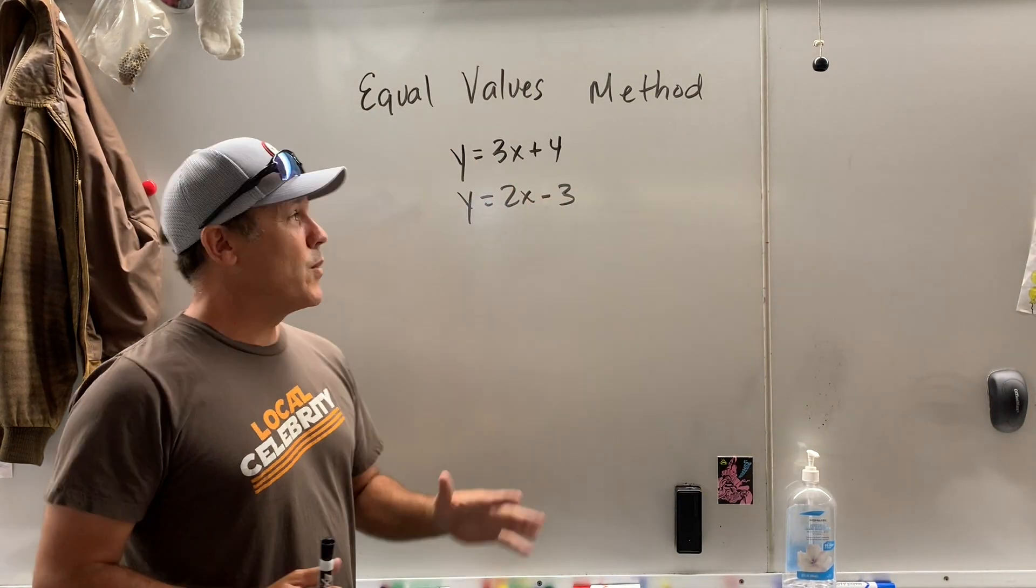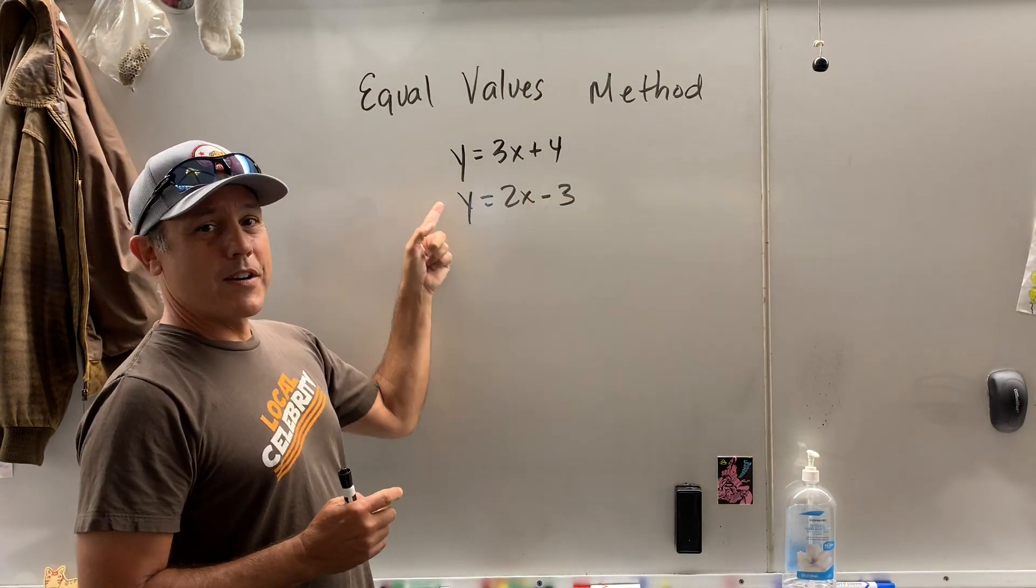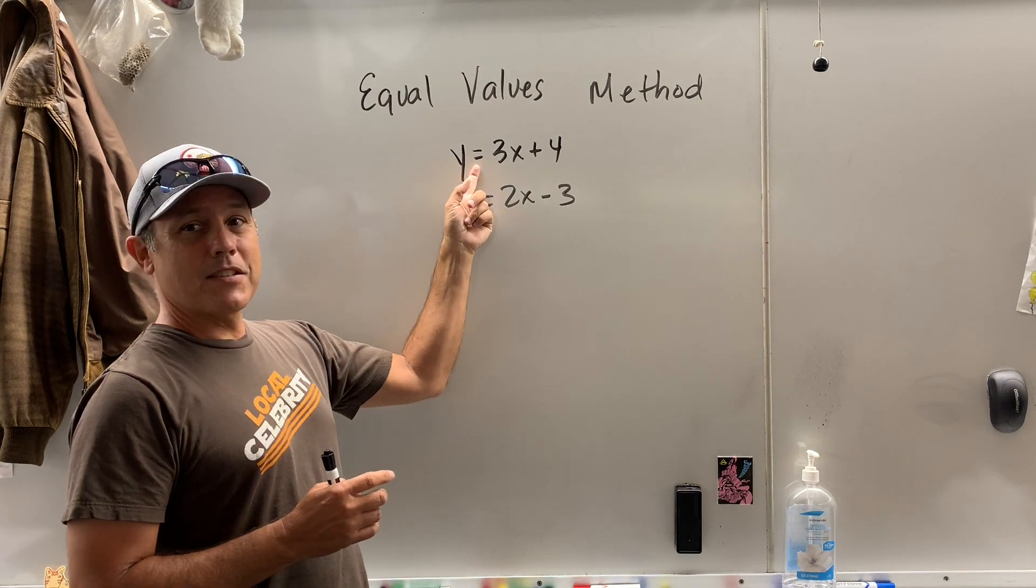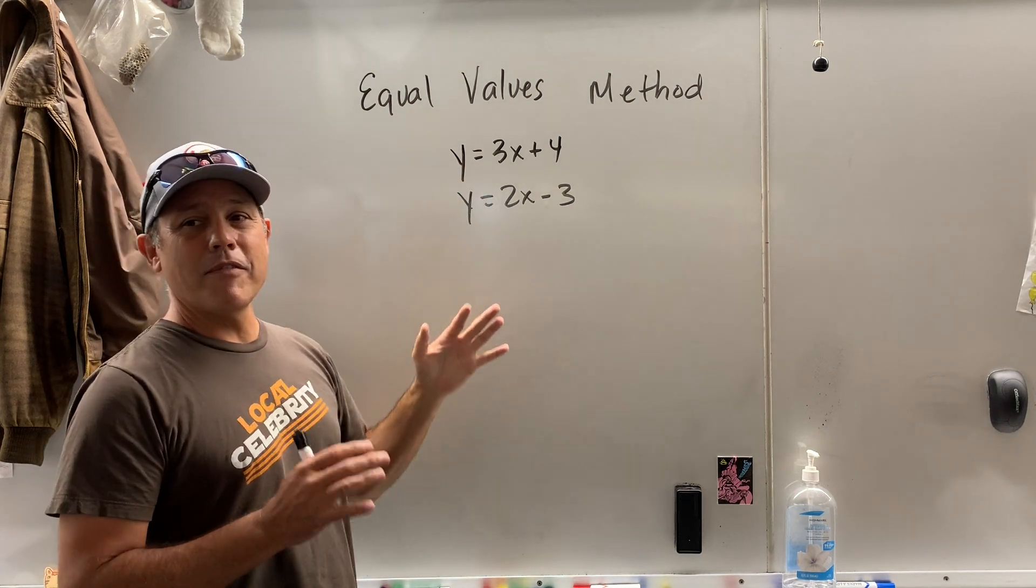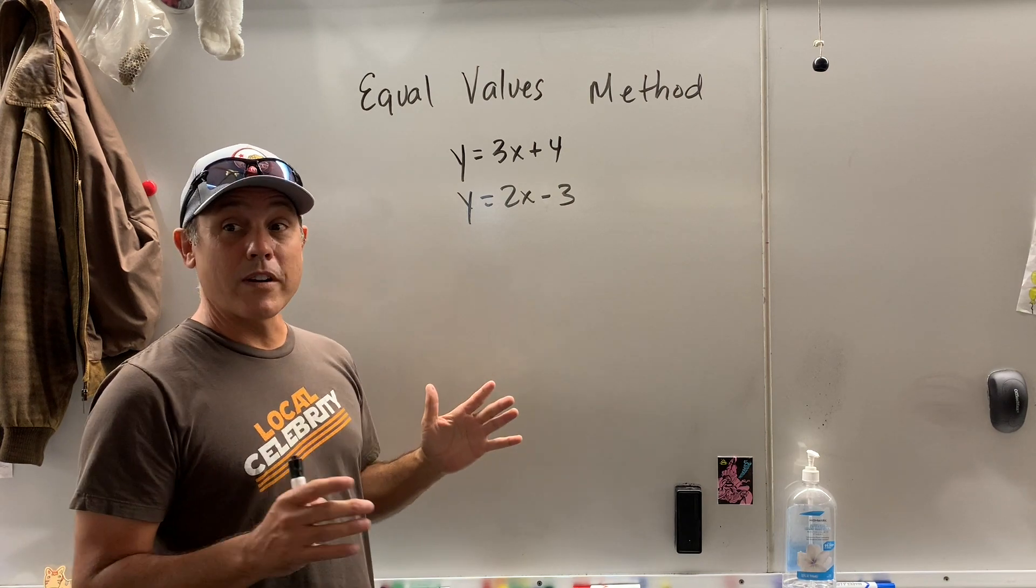Equal values method works when you have one variable all by itself in both equations. So this has equal values method written all over it.